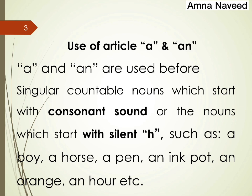For example: a boy, a horse, a pen — but an ink pot, an orange, and an hour. I have used 'a' with 'horse' because in that word h is not silent — it is pronounced. However, I have used 'an' with 'hour' because the h is silent, so the first sound you hear is the vowel sound 'o', not h. That is the reason we use the article 'an' with 'hour'.